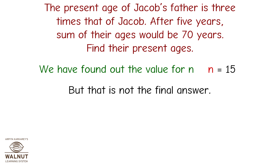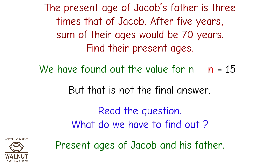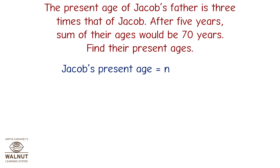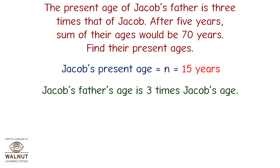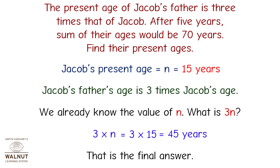n equals 15 is the solution to our equation. But that is not the final answer — we need to find their present ages. Jacob's present age equals 15 years. Jacob's father's age is three times Jacob's age, so 3n equals 3 into 15, which is 45 years. That is the final answer.